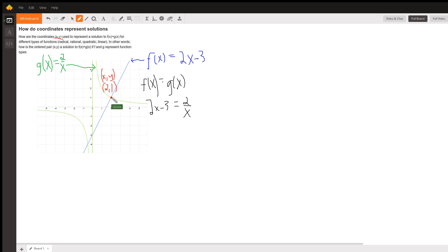And it shows you the solutions because this is a point that is on both graphs. It satisfies f of x because f of 2 equals 1, and it satisfies g of x because g of 2 equals 1, which is why this coordinate point is a solution.